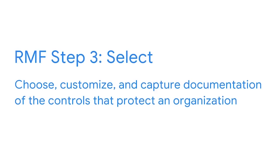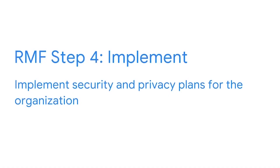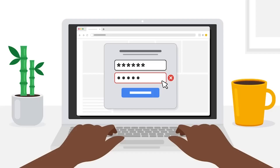Step 3 is Select, which means to choose, customize, and capture documentation of the controls that protect an organization. An example would be keeping a playbook up to date or helping to manage other documentation that allows you and your team to address issues more efficiently. Step 4 is to Implement security and privacy plans for the organization. Having good plans in place is essential for minimizing the impact of ongoing security risks. For example, if you notice a pattern of employees constantly needing password resets, implementing a change to password requirements may help solve this issue.